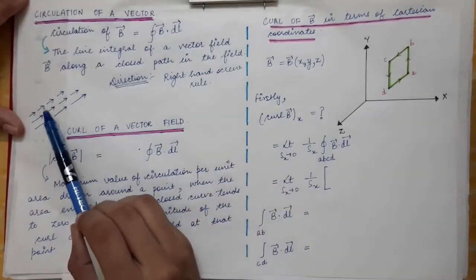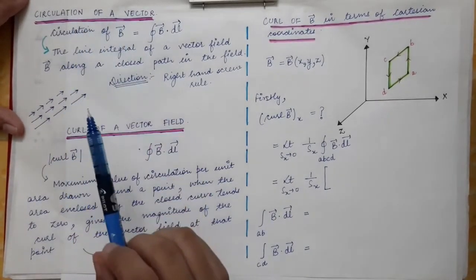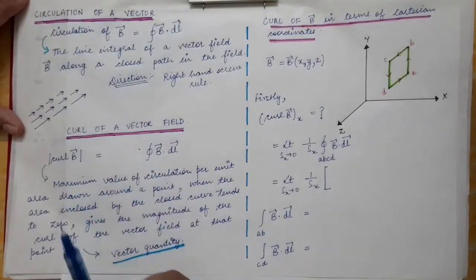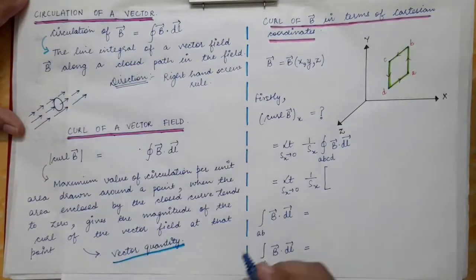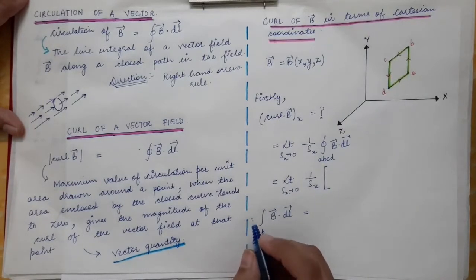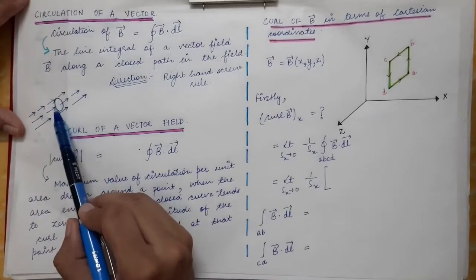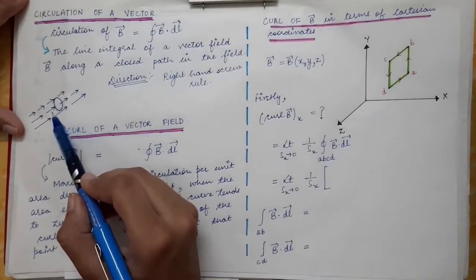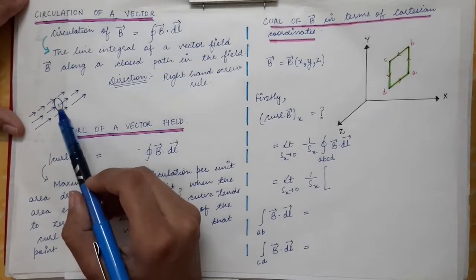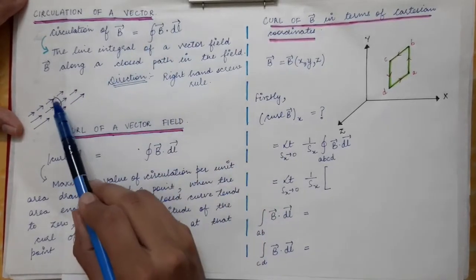There is some vector field present in the space. We have to define the circulation of a vector, and this is defined over a closed path. So we consider any closed path in the field, just as we had drawn a surface in the vector field. At all points on the drawn path, there will be a certain direction as well as magnitude of the vector field.